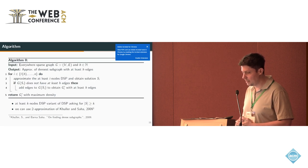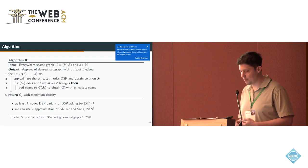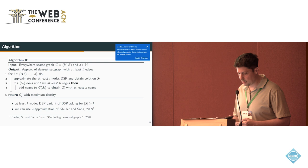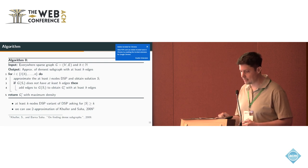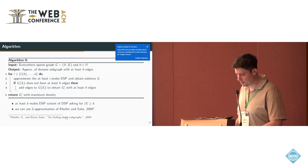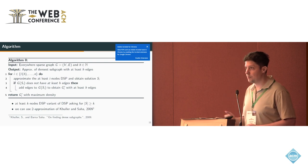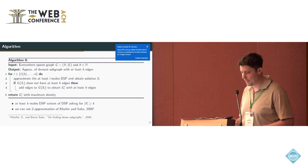The idea for approximating the at-least-H-edges dense subgraph is that we approximate the at-least-K-nodes dense subgraph variant, where we find a dense subgraph that has at least K nodes. We just guess the number of nodes in our at-least-H-edges dense subgraph. For this approximation, we use the 2-approximation of Koll and Zaha. If such an approximated DSP doesn't have H edges, we add just enough edges such that we have H edges. Then we return, in the end, the graph that we found with the maximum density.